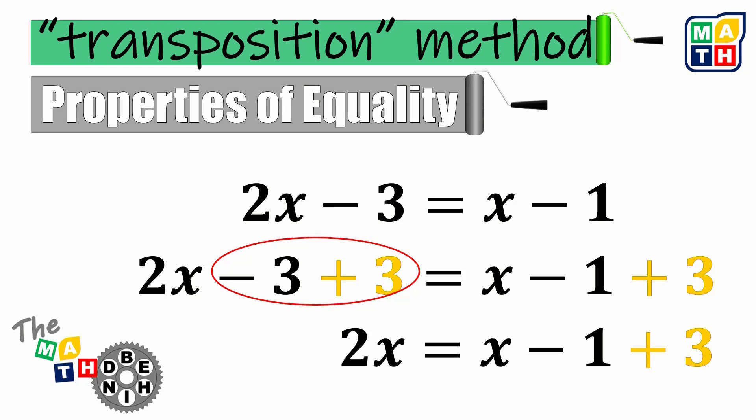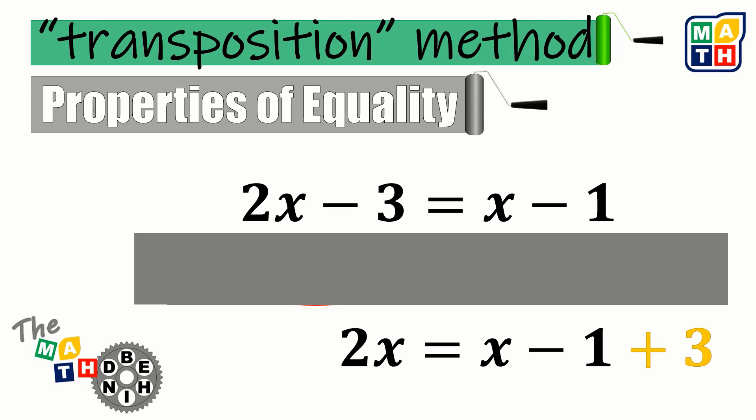If we are to cover this middle part, we could actually just say that from the original sign of 3, which is negative, found on the left-hand side of the equation, it looks like it was just simply transferred to the right-hand side of the equation with a change in its sign. From negative, it somehow looked like it was transformed into a positive 3.